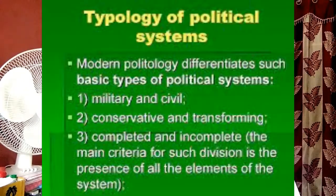What is America's political system called? The United States is a constitutional federal republic in which the president, congress, and judiciary share powers reserved to the national government, and the federal government shares sovereignty with the state governments.